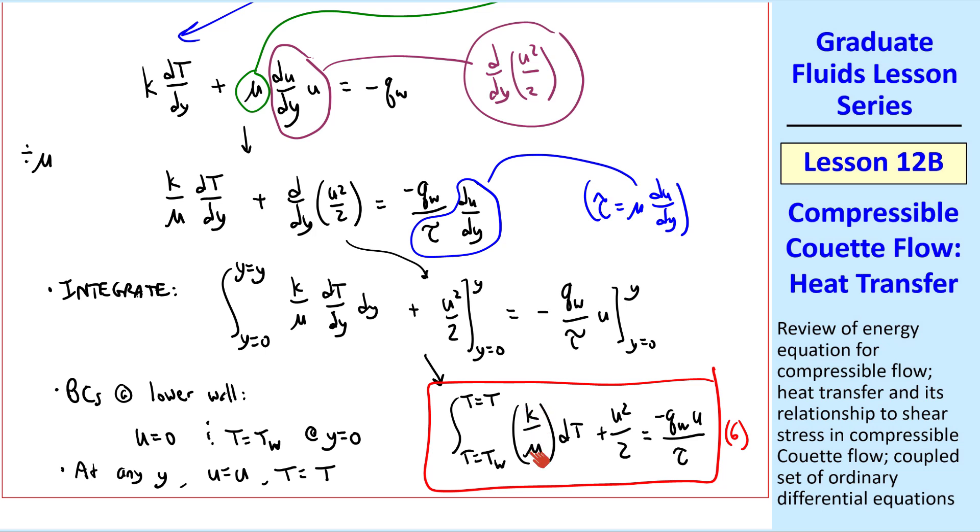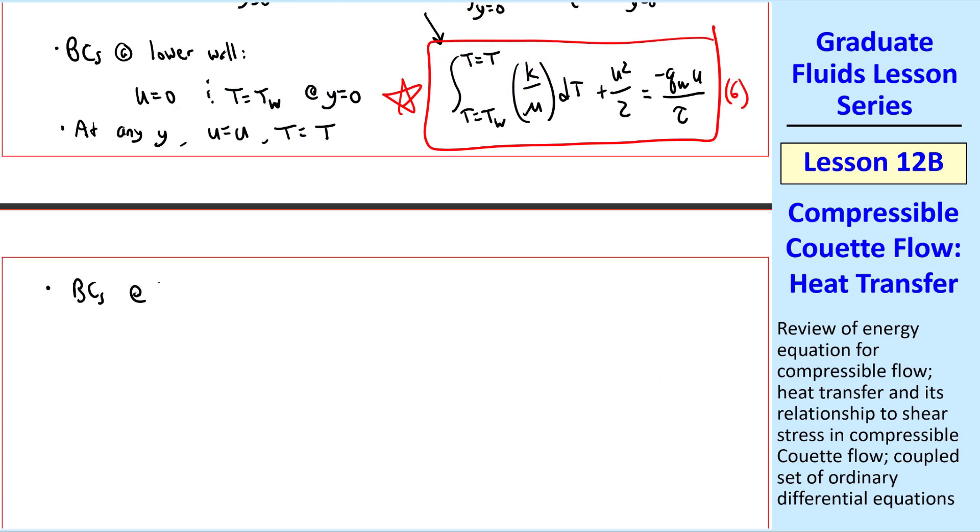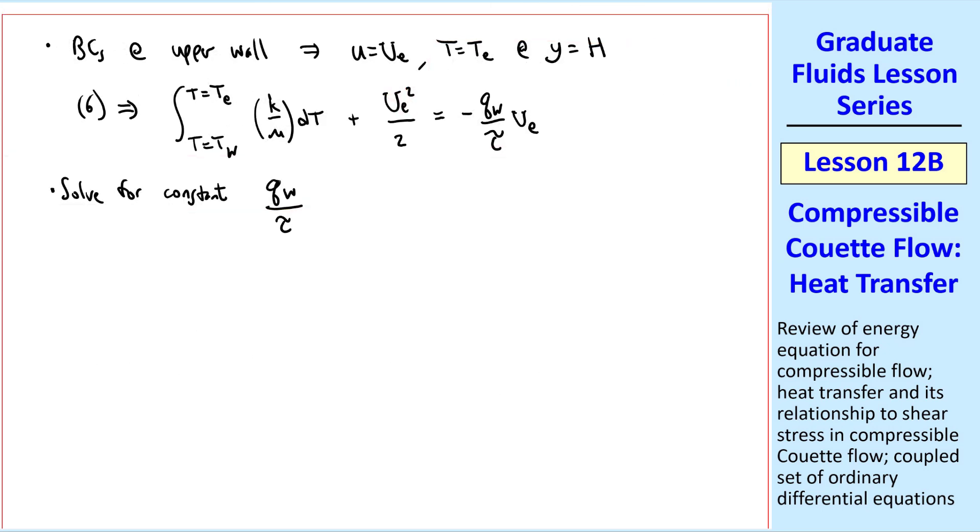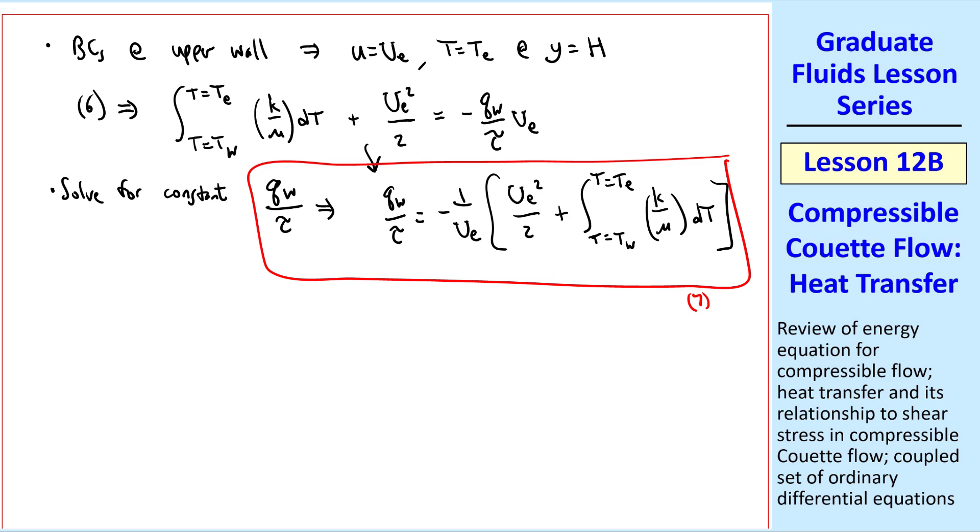Keep in mind that, since k and mu are functions of temperature, we keep them inside this integral. This equation 6 is our answer, except that we don't know qw or tau. So let's apply boundary conditions at the upper wall, namely u equal ue, and t equal te, at y equal capital H. Thus, at the upper wall, the integral goes from tw to te, and the velocity squared term becomes ue squared over 2, and then the right-hand side is the same except u is now ue. Thus, we can solve for the constant qw over tau from this equation, qw over tau is negative 1 over ue times ue squared over 2 plus our integral, and I'll call this equation 7.